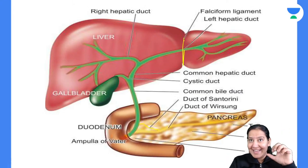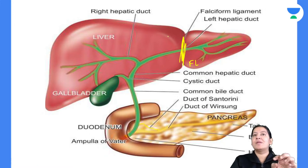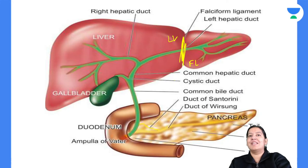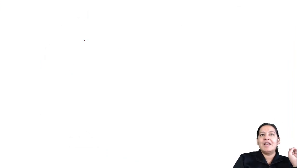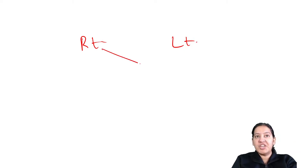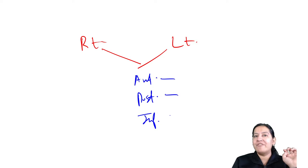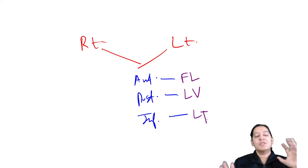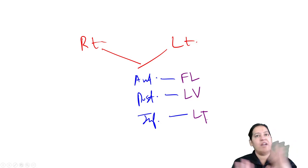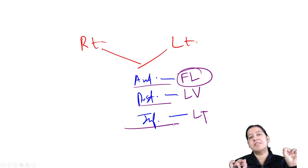So anteriorly: falciform ligament; posteriorly: ligamentum venosum; inferiorly: ligamentum teres. In your exam, read the question completely - whether the examiner is asking anteriorly, posteriorly, or inferiorly. All three options will appear as A, B, C, D. If nothing specific is mentioned, go with falciform ligament as the standard answer for anteriorly.